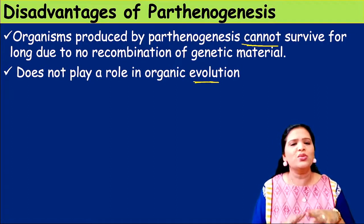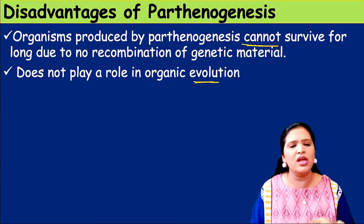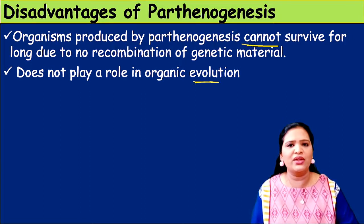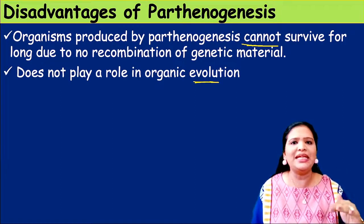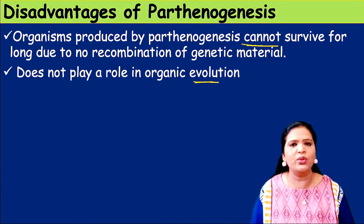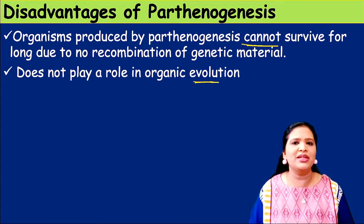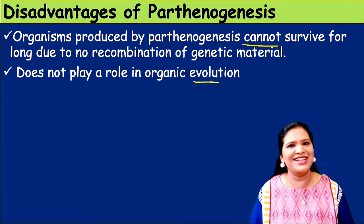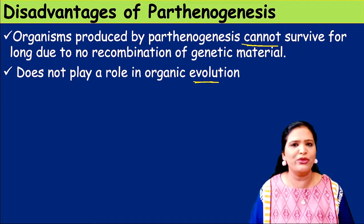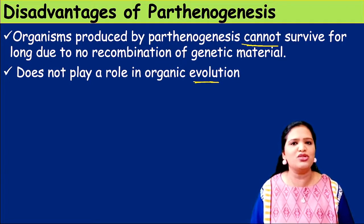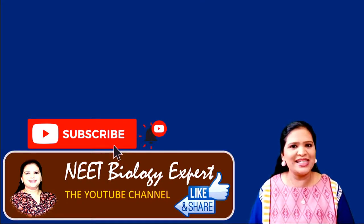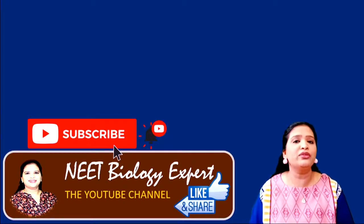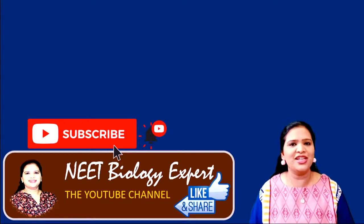Parthenogenesis is a simple topic. Just remember: what is Parthenogenesis, the types — natural and artificial — complete, incomplete, and pedogenetic natural types, and how artificial Parthenogenesis is induced by physical or chemical means. I hope you understood this lecture. If you like it, please subscribe to our channel NEET Biology Expert. Meet you in another lecture. Till then, take care. Thank you.